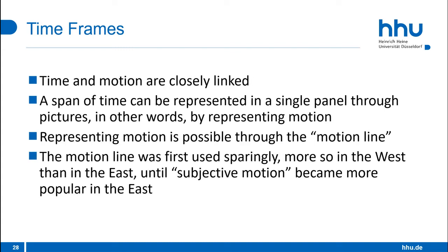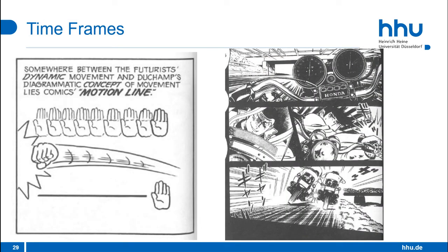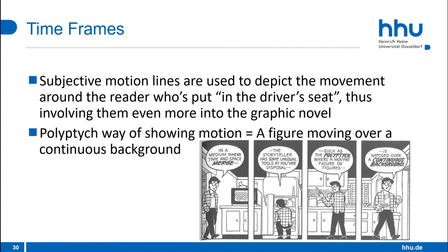Time and motion are also closely linked. A span of time can be represented in a single panel through pictures — in other words, by representing motion. This is possible through the motion line, which was first used sparingly, more so in the west than in the east, until subjective motion became more popular in the east. Here you can see the basic concept of the motion line on the left side and an example of how it's used in eastern art on the right. Subjective motion lines depict movement around the reader who is put in a driver's seat, involving them even more in the graphic novel. Motion and passing time can also be depicted by having a figure move over a continuous background — this is called the polyptych way of showing motion.